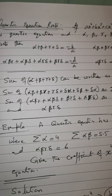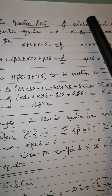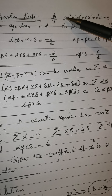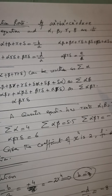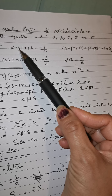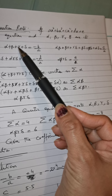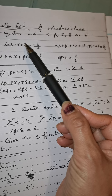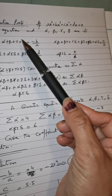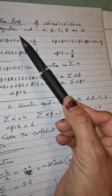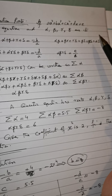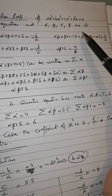According to Vieta's formulas, the sum of all roots — alpha plus beta plus gamma plus delta — will be minus b over a, that is the coefficient of x³ divided by a with a negative sign. Next, the sum of products of pairs: alpha·beta + beta·gamma + gamma·delta + delta·alpha + delta·beta + delta·gamma — you will find six such entities — and their sum equals the coefficient of x² divided by a, that is c over a.